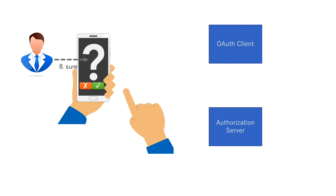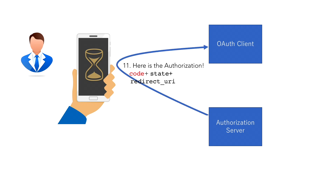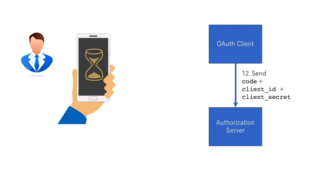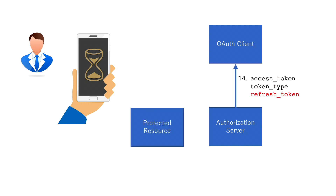and asks the user permission. Upon the user's action that confirms the user permission, it sends the sender constraint token called authorization code, which is bound to the client ID, back to the client's callback URI (redirect URI). Upon receiving the code, the client sends it to the authorization server's token endpoint. This request is called token request. The token request is an authenticated request — the client must authenticate itself using client ID and client secret. The authorization server then verifies that the code is associated with the authenticated client,